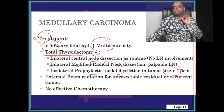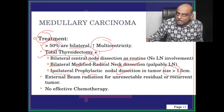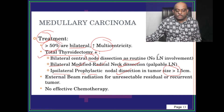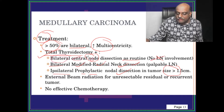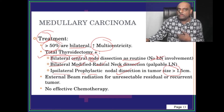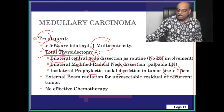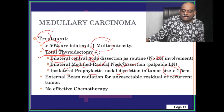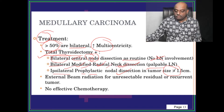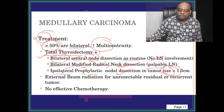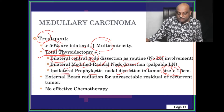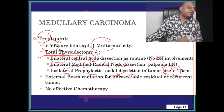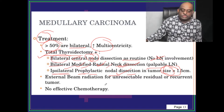To recap: how do you treat medullary carcinoma? Total thyroidectomy. If there is no lymph node involvement, still do bilateral central node dissection as a routine. If there is a palpable node, bilateral modified radical neck dissection. If the tumor size is more than 1.5 centimeters, also add ipsilateral prophylactic nodal dissection.